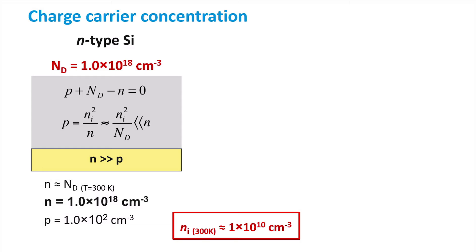Now, how do we calculate P? We use the mass action law. With this relationship, we can easily calculate that the concentration of holes P is equal to 100 holes per cubic centimeter. When we compare the concentration of electrons to the concentration of holes, we clearly notice the enormous difference in the number of electrons and holes present in this example of N-type silicon.